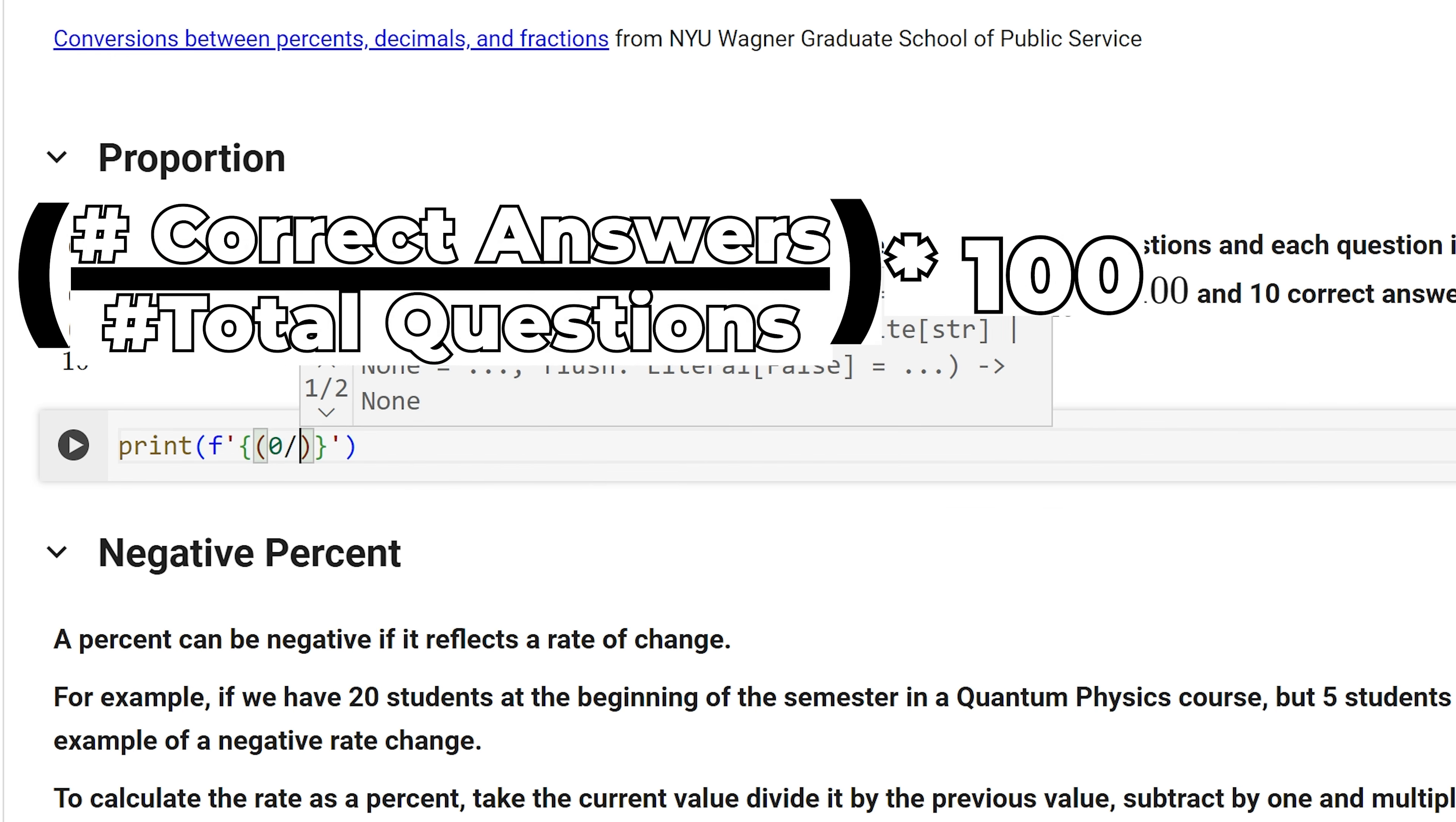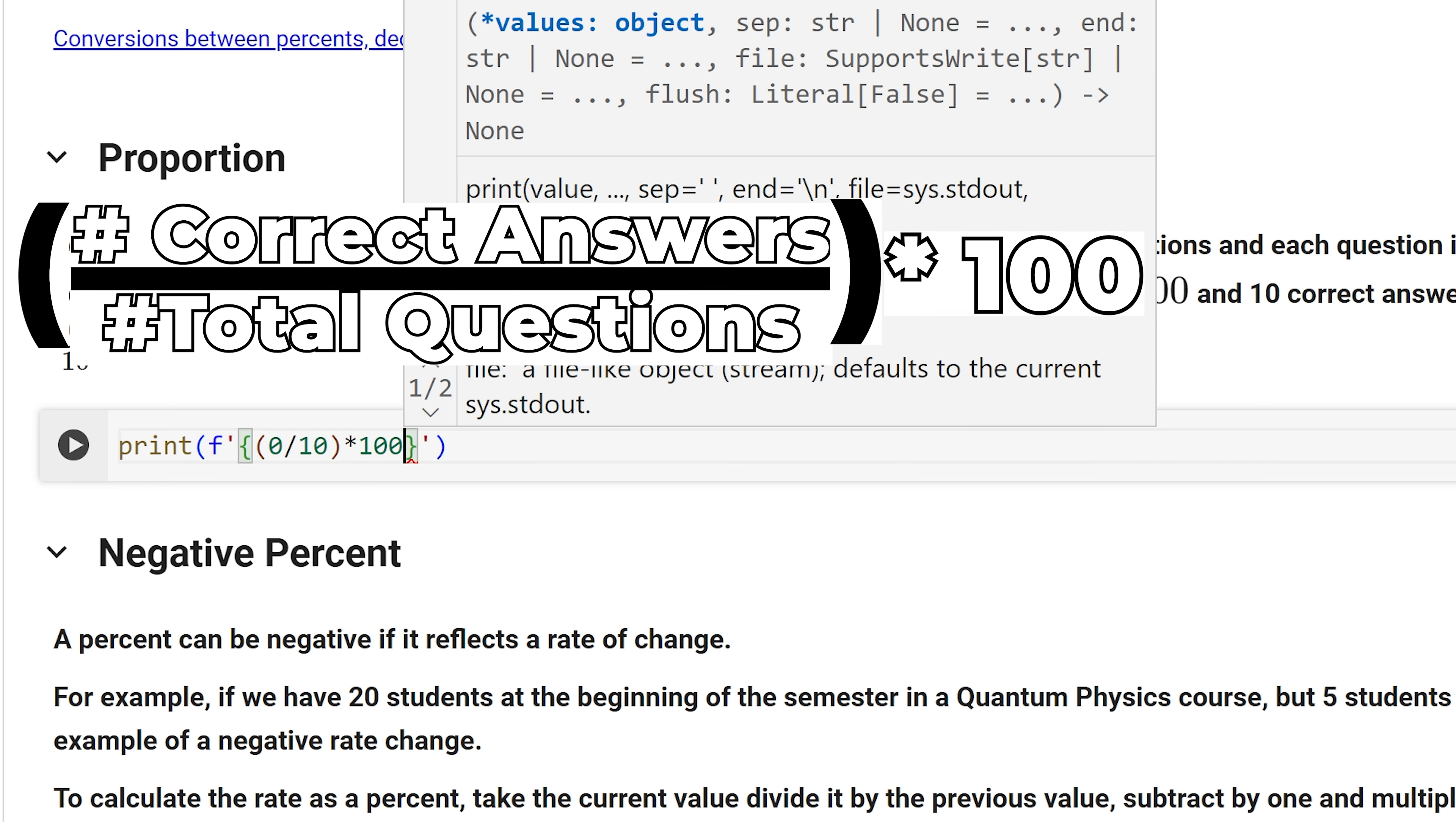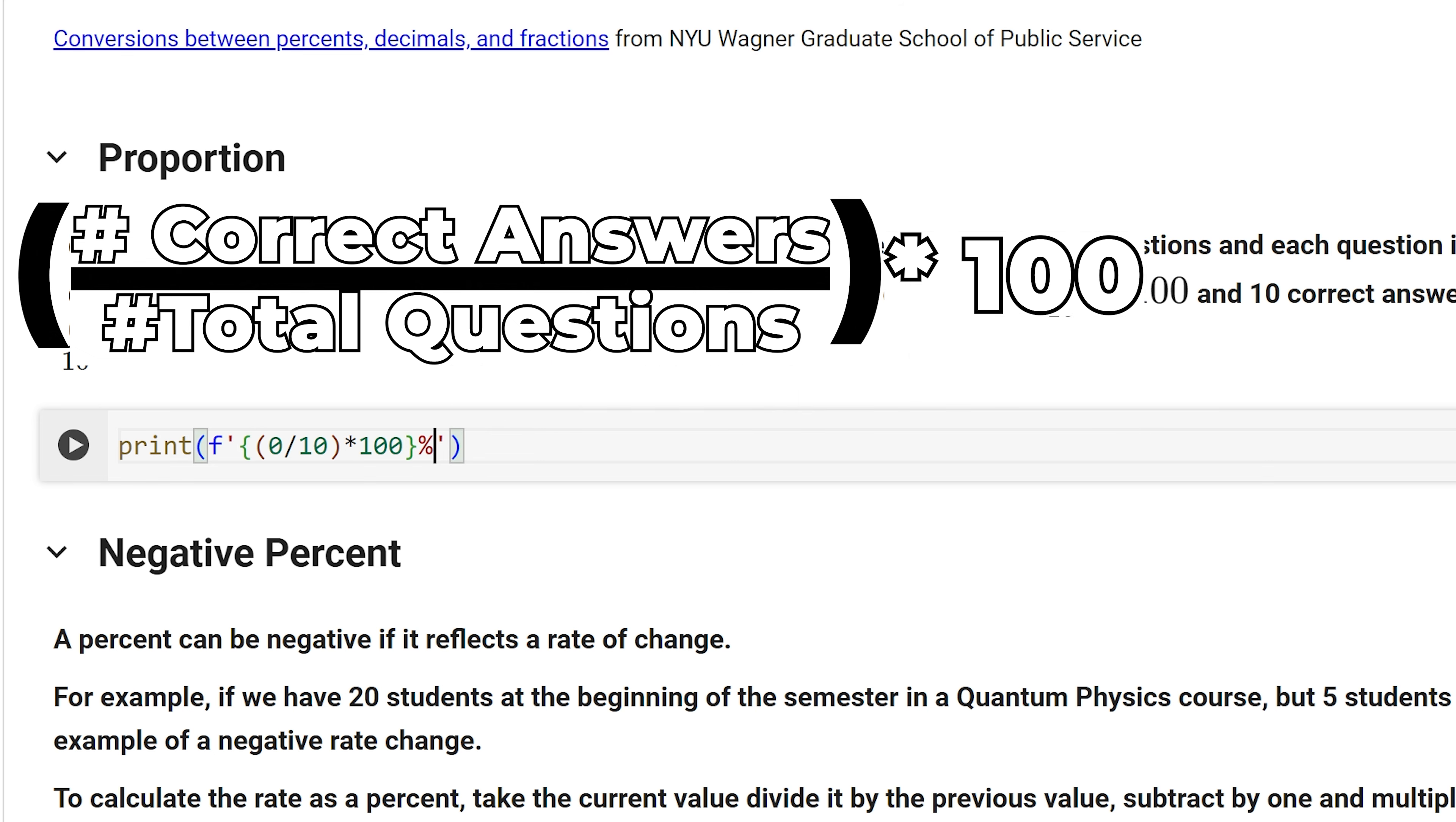To get the proportion, I am going to take the number of correct answers, divide it by the total questions, and multiply it by 100 to get the percent. I am going to put the percent sign outside of the curly braces.